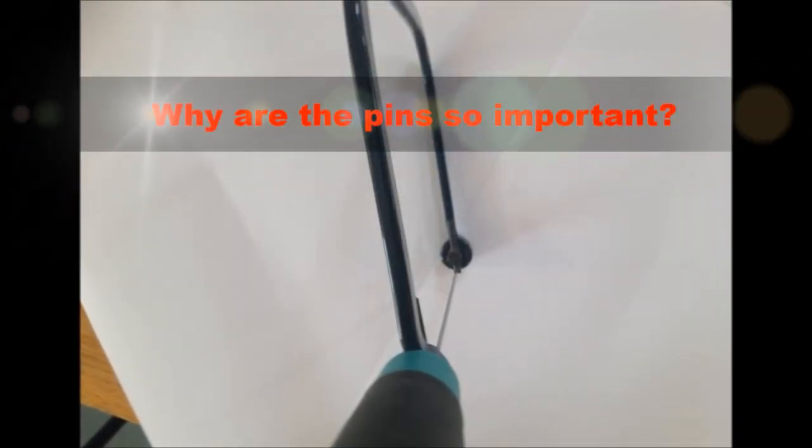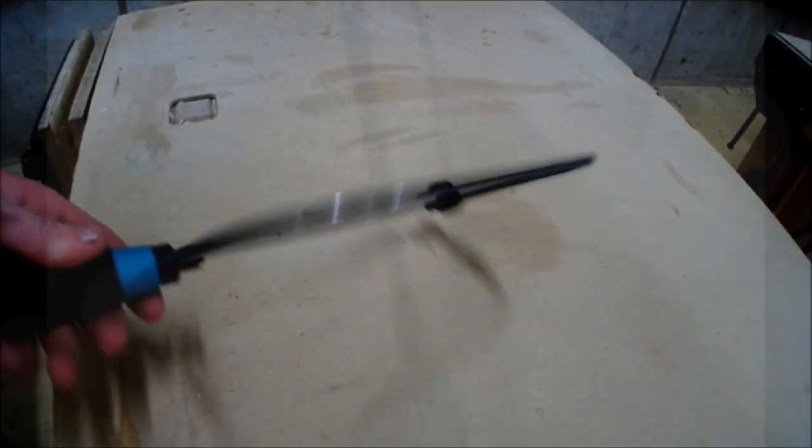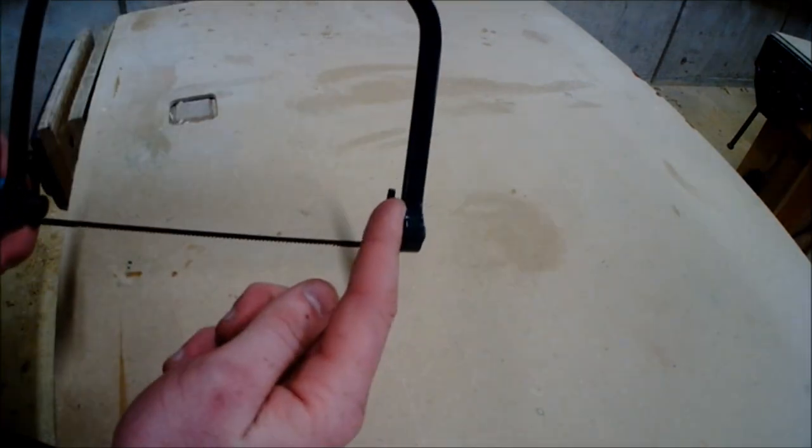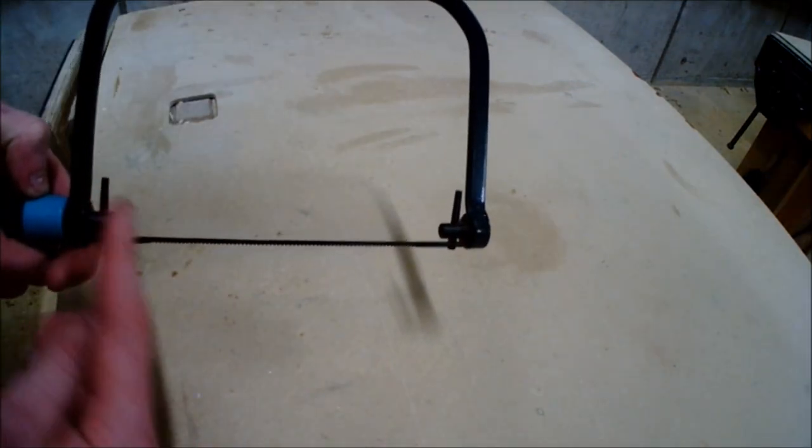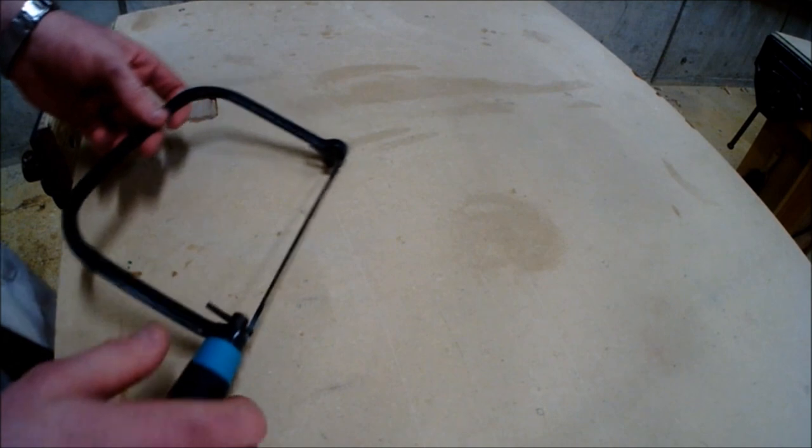Why are the pins so important? The pins have to be in line with each other because this is what makes the blade straight. When the two pins are in line with each other, as shown in the video, this means that the blade is also straight.